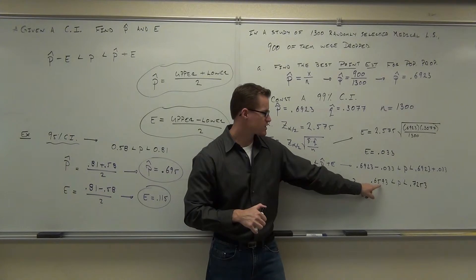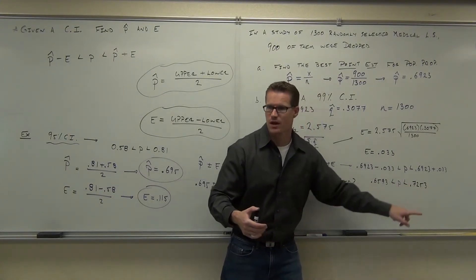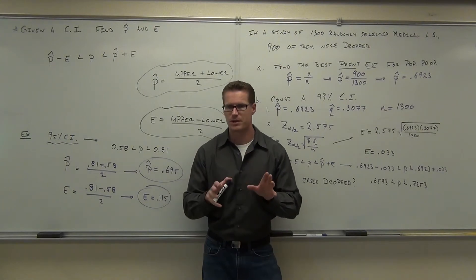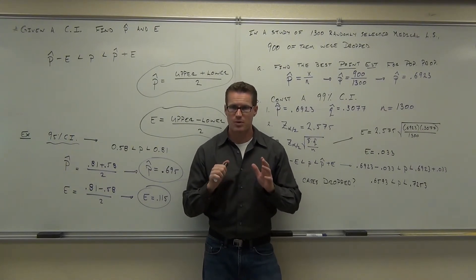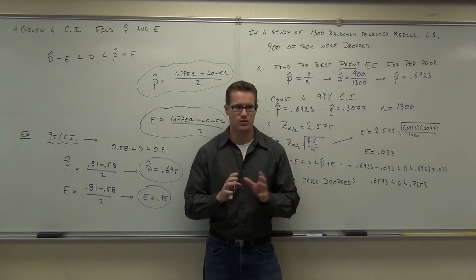So this is about 66%. This is about 73%, right? Here's what you just interpreted. I don't know what the actual population proportion of dropped lawsuits are. I don't know.